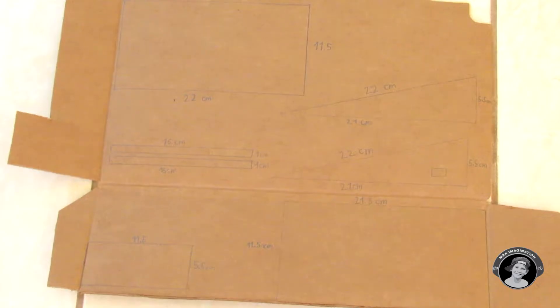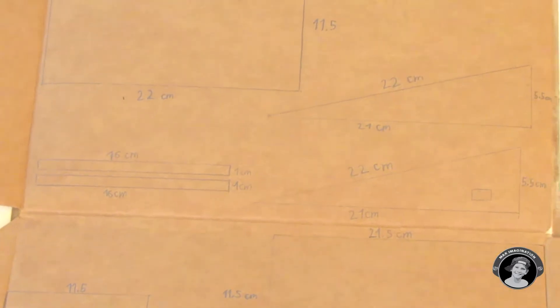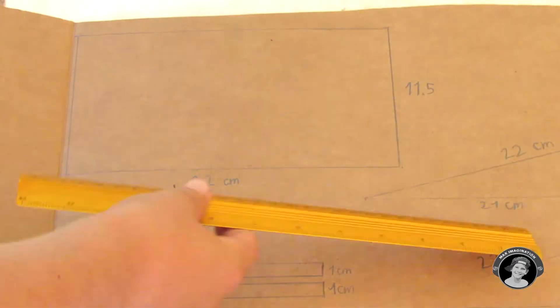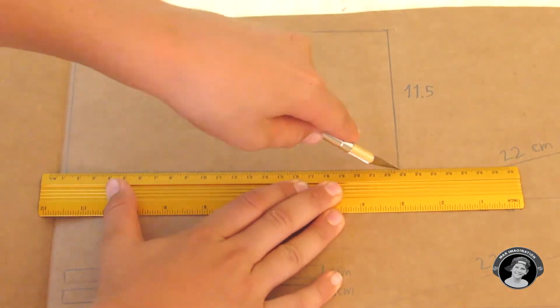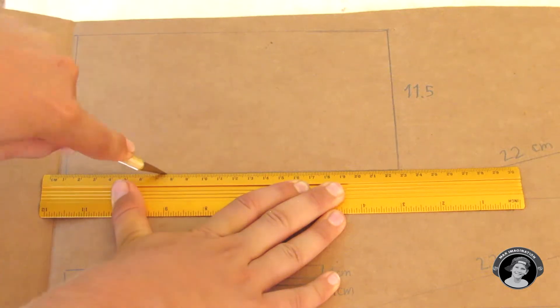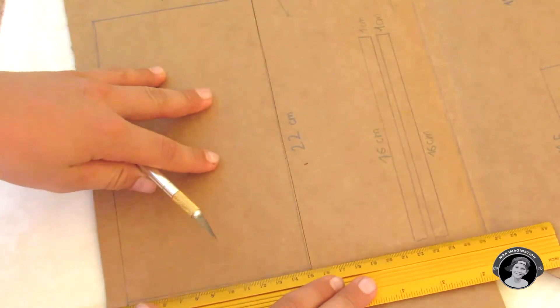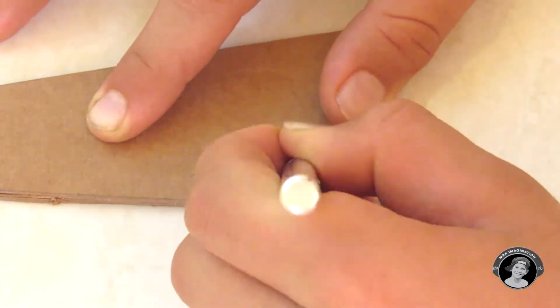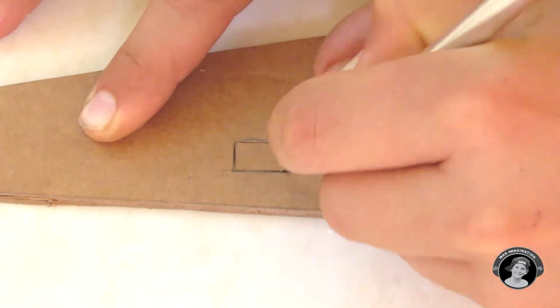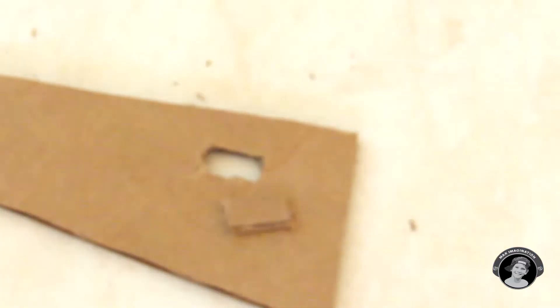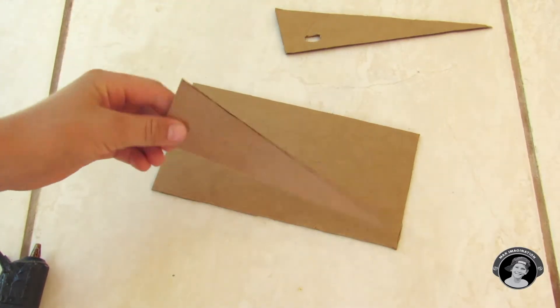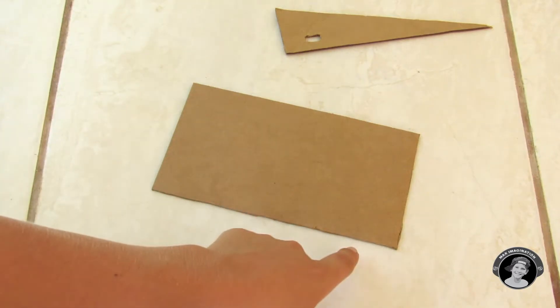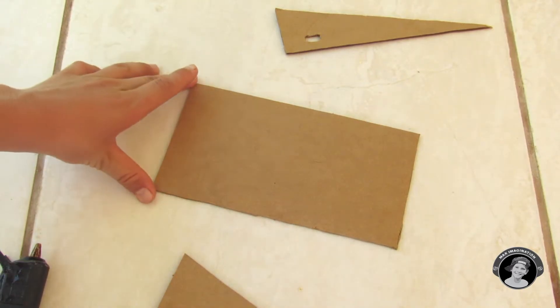So now we're going to glue these two triangles to the bottom board that measures twenty one and a half centimeters by eleven and a half.